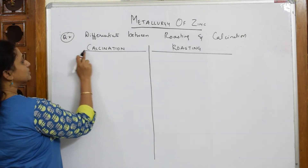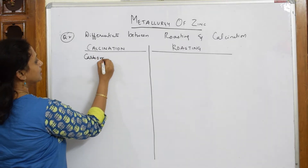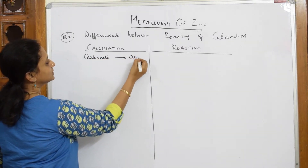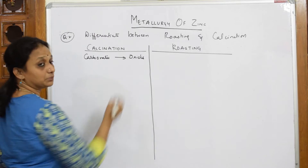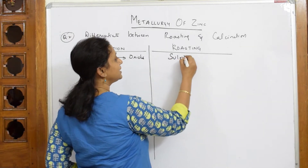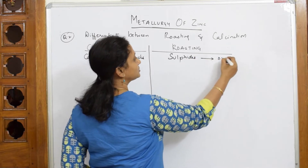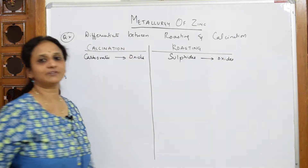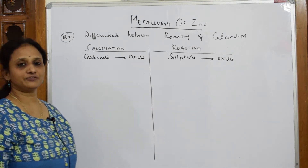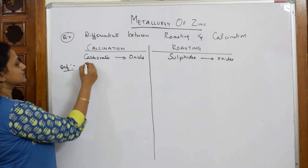Calcination — remember C. C means carbonates. Here carbonates are getting converted to their oxides. Roasting is a process of converting sulfide ores or sulfides to oxides. Both processes produce oxides, but in roasting we treat sulfide ores only. Now when I have to write the definition of calcination, let us say, the definition of calcination is...